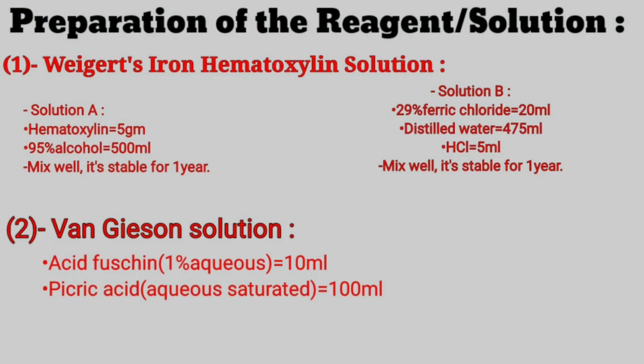Now we are discussing how to make Van Gieson solution. To make Van Gieson solution, we need acid fuchsin 1% aqueous 10 ml, then picric acid aqueous saturated 100 ml. Mix both together and the Van Gieson solution is ready.